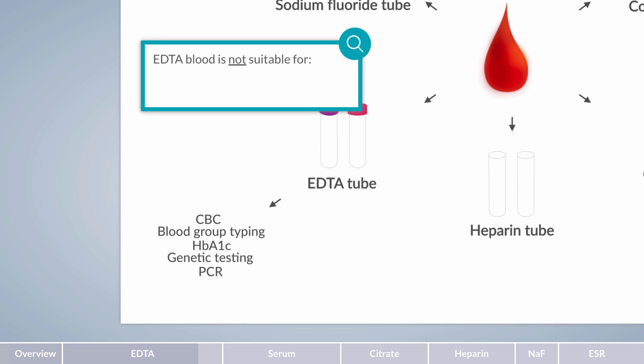However, there are tests for which EDTA blood is not suitable, because EDTA can bind to any divalent ion. Therefore, calcium or magnesium levels can't be determined in EDTA blood. In addition, the activity of enzymes whose spatial structure is stabilized by such ions also can't be analyzed. To determine the level of these ions and enzymes, blood should be collected in a serum tube.